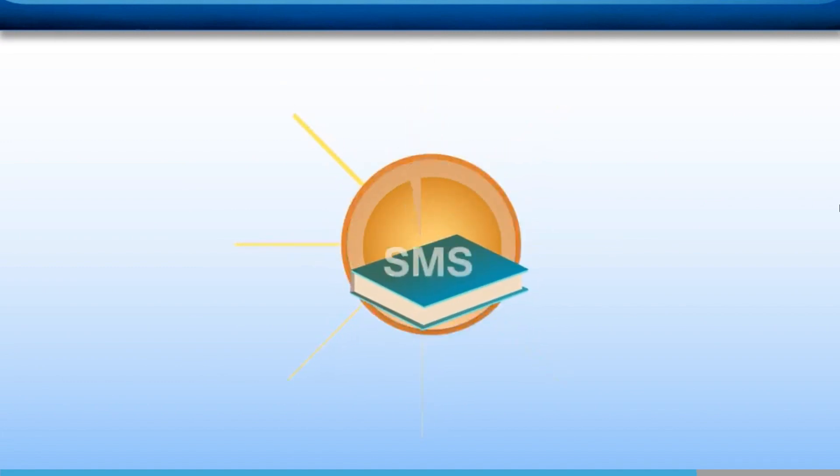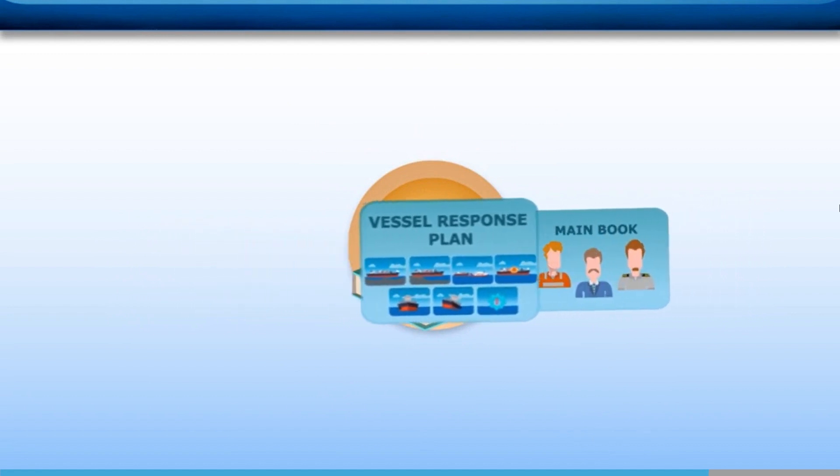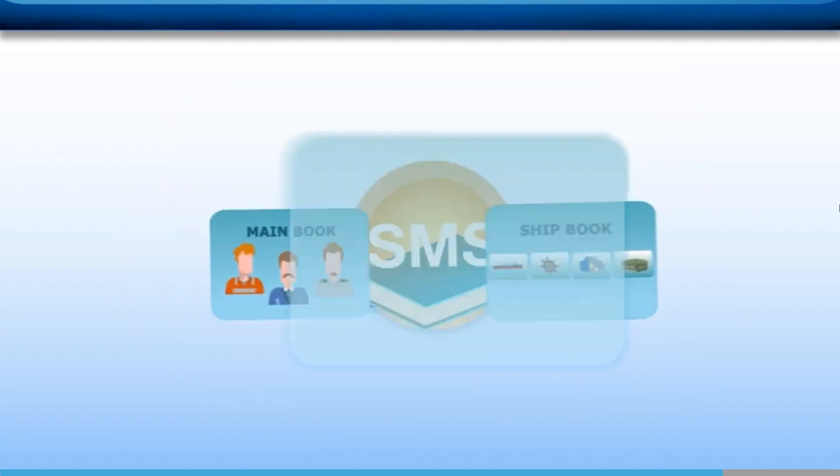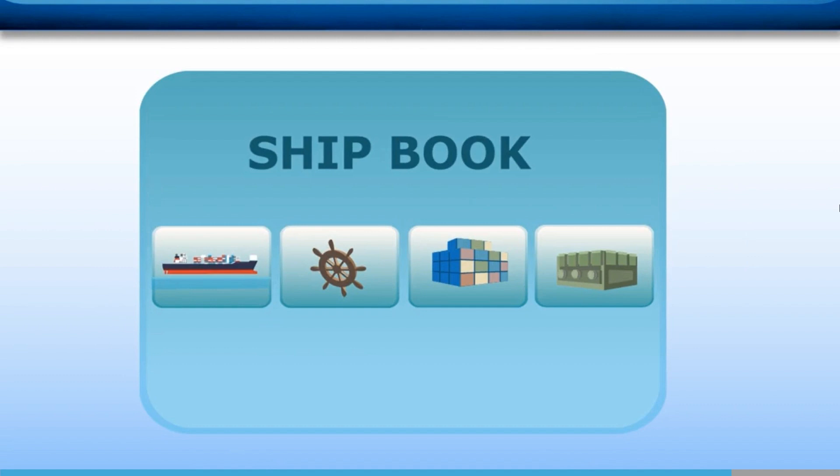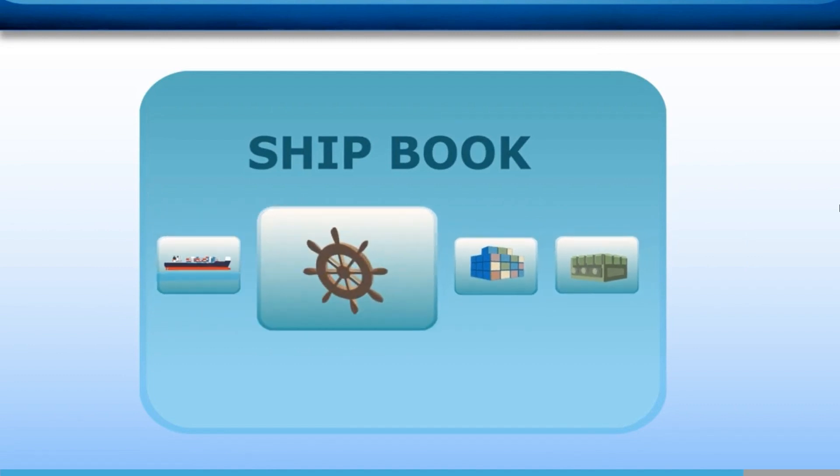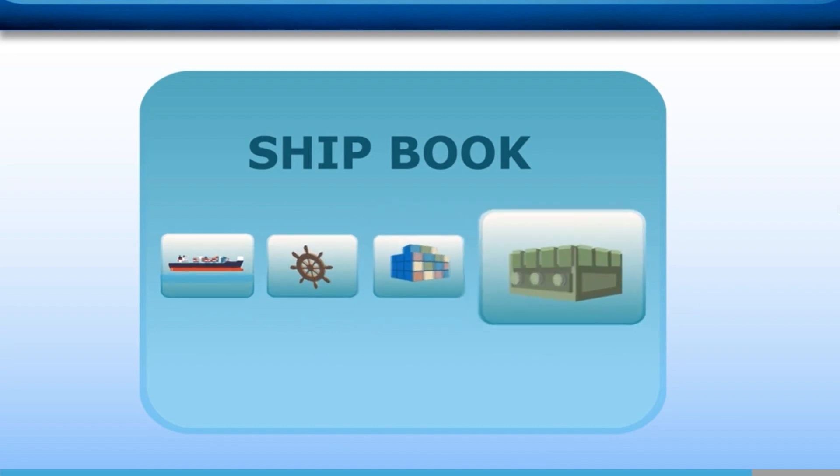The SMS consists of a documentation structure that contains the main book, the ship book, and the vessel response plan. The main book includes policies and procedures applicable to the whole organisation. The ship book includes procedures, routines, and checklists referring to onboard operations. It can be divided into the general part, the bridge order book, the cargo or deck order book, and the engine order book.